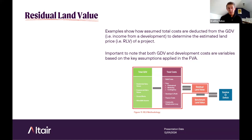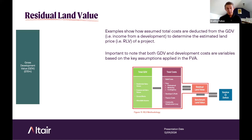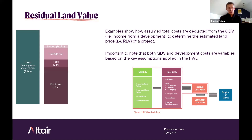Working through an example of how to calculate the residual land value: first, calculate the gross development value — the income achievable from the proposed development. In this example that's £10 million, made up of income from private sales, disposals of affordable housing, or other commercial income. Then the costs of development are calculated — how much it costs to build, fees incurred in delivering the planning application and selling the homes, cost of planning obligations, cost of interest, plus an acceptable profit margin. These costs are deducted from the GDV to arrive at the residual land value. Here the total GDV is £10 million, total costs are £8 million, and therefore the residual land value is £2 million.